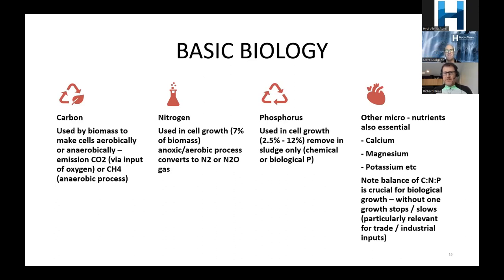With biological phosphorus removal you can find somewhere between 2.5% and about 12% phosphorus in your sludge or biosolids. Other things we might be missing include calcium, magnesium, and other micronutrients — relevant when you're treating waste from, say, a chocolate factory where micronutrients are missing, or an abattoir where you have lots of nitrogen but not much carbon. We want to balance our biology — balance our mass of nutrient flows into the plant so bugs can do their job.